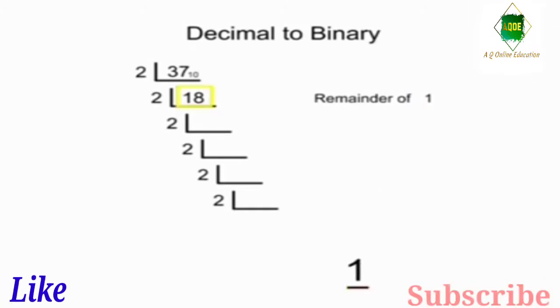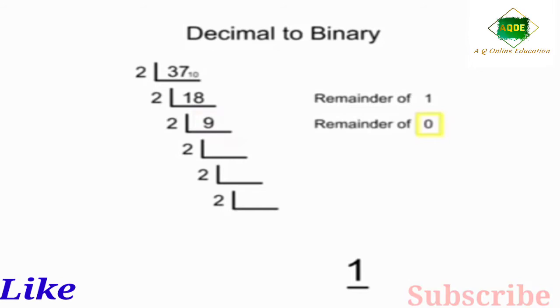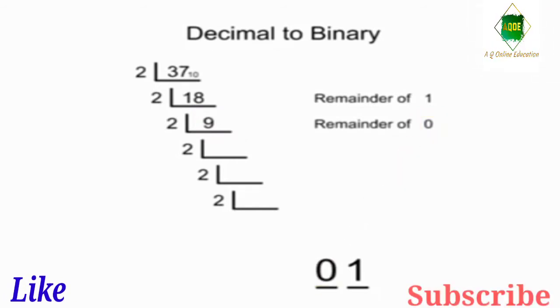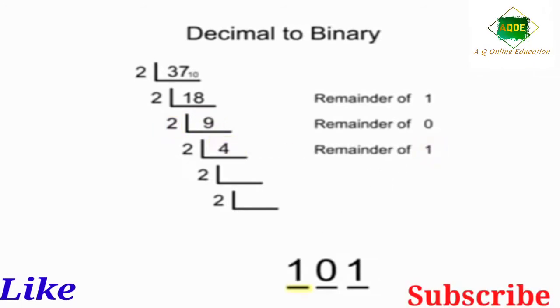Next, you'll divide 18 by 2 to get the next digit. It will be 9 with a remainder of 0, so 0 will occupy the second position. Moving along, the third position will be determined by dividing 9 by 2. This will give you 4 with a remainder of 1 to occupy the third position.